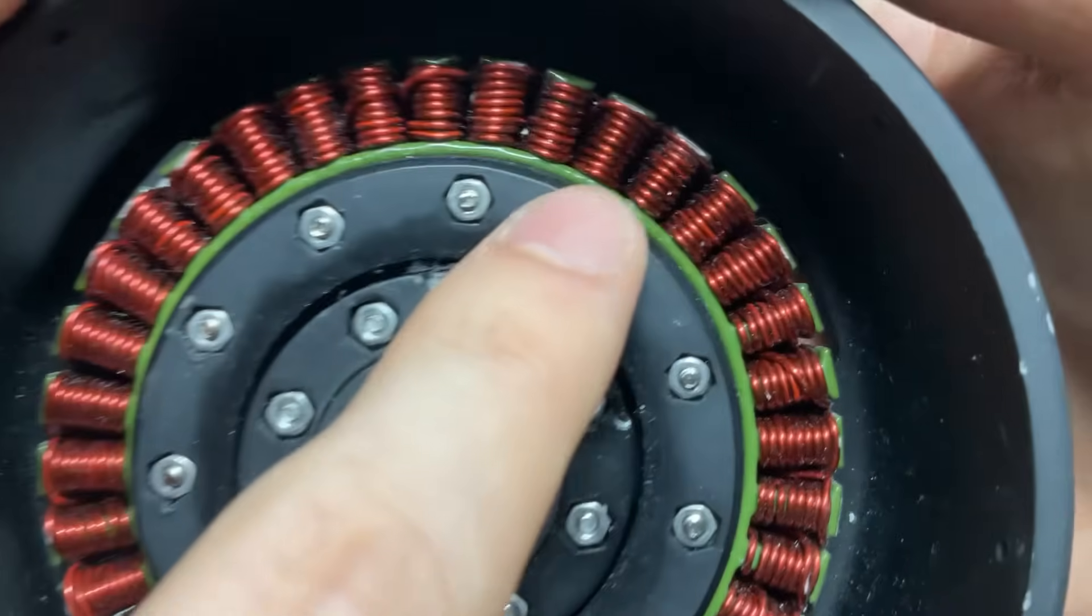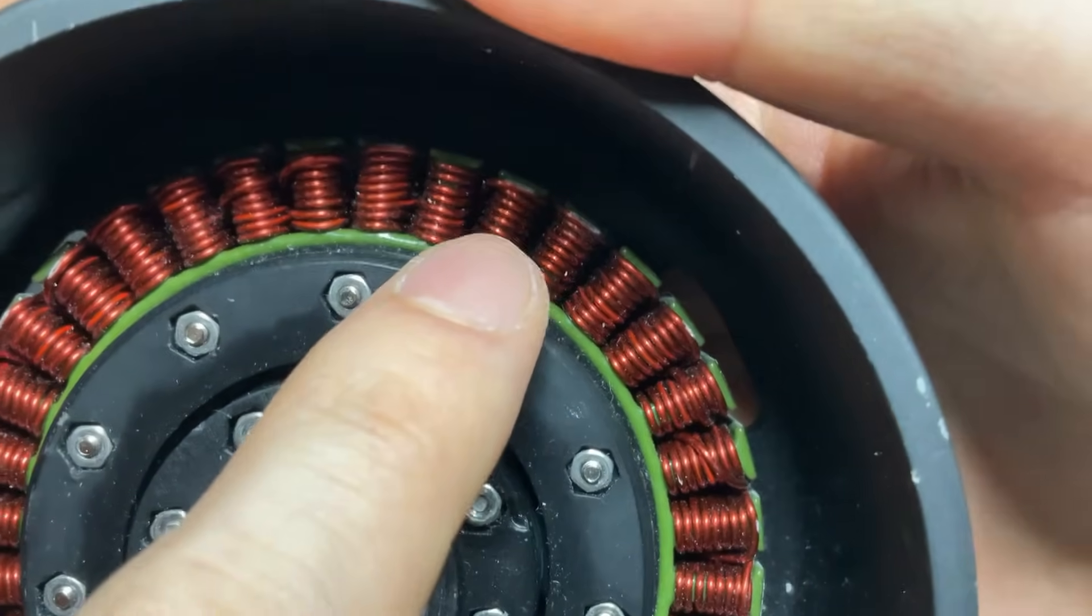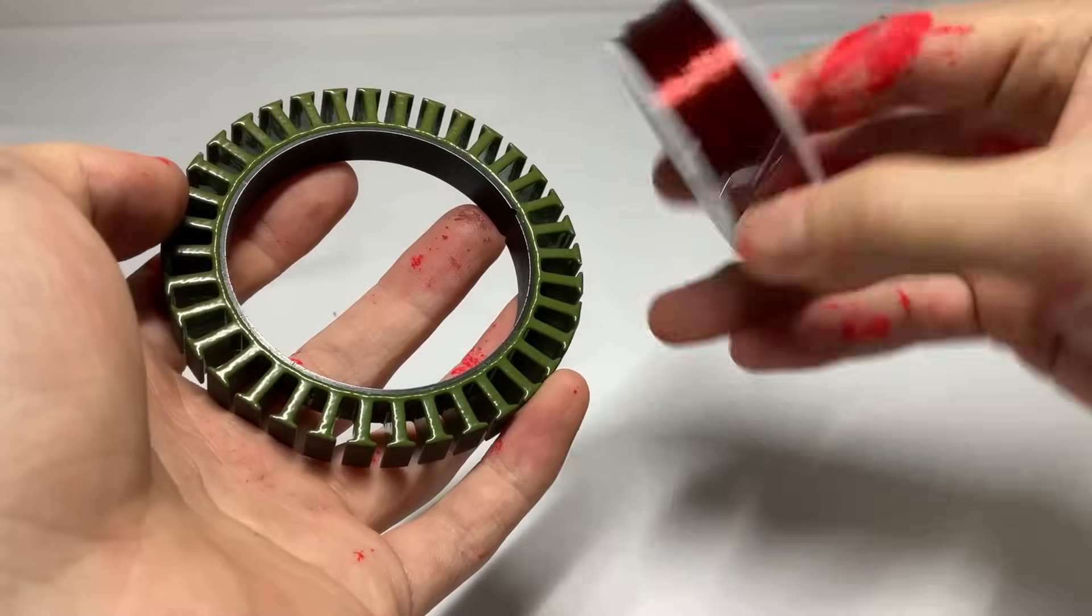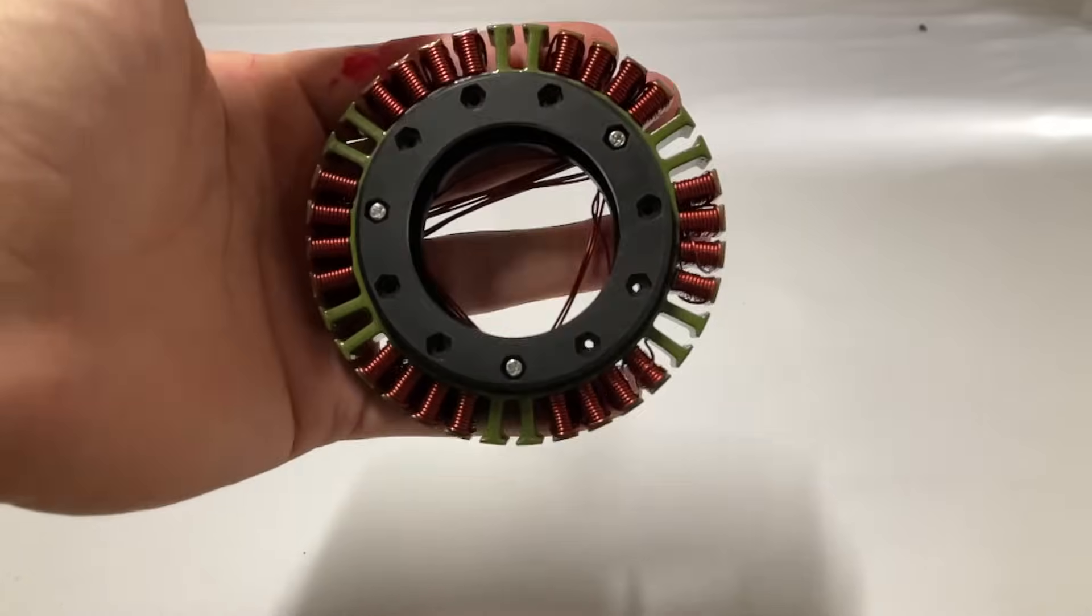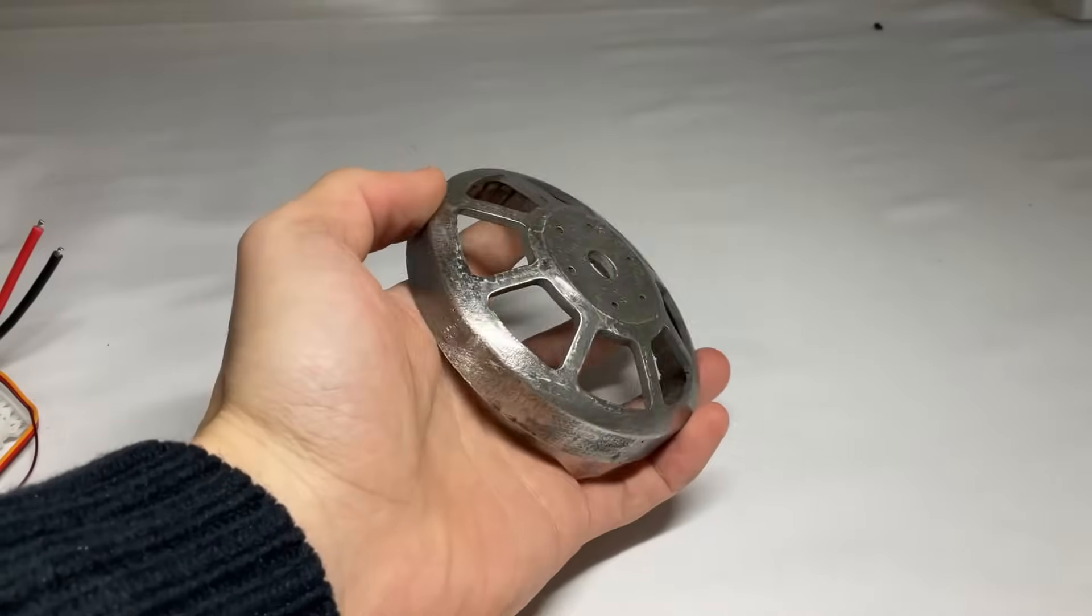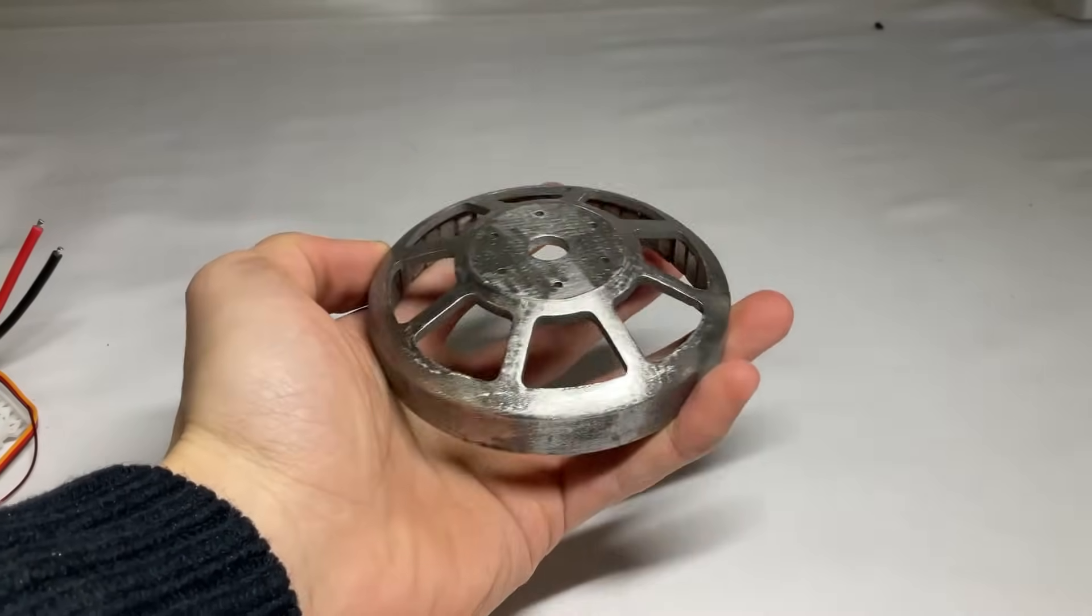Because the rotor was tilted, the winding got scraped, so I'm going to rewind it. Since 20 AWG wire was too thick and hard to handle, I'll switch to a slightly thinner 22 AWG. I also took the opportunity to polish the rotor, so it's nice and smooth.